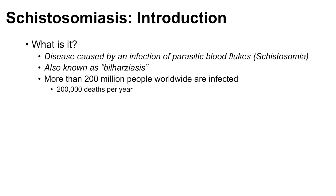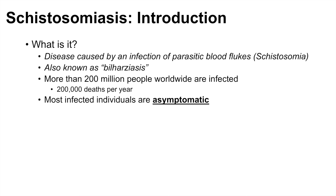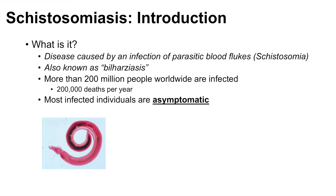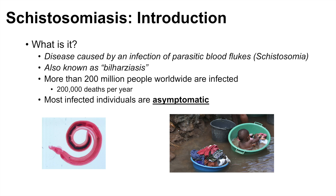Most infected individuals are actually asymptomatic. Here is a picture of the schistosoma parasitic blood fluke. Individuals are infected with the blood fluke in contaminated water, so when individuals such as children and adults wade through the waters, they can be infected by the schistosoma blood flukes.